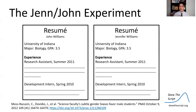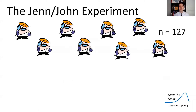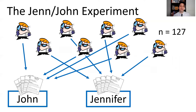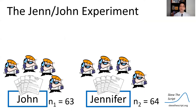The only thing changed across the identical copies of the application materials was the name. In half the copies the name was John; in the other half it was Jennifer. They found 127 science faculty at universities and randomly sent them either a John or Jennifer set of materials. The faculty evaluated those materials thinking they were for a real lab manager position, rated the applicants on higher ability, gave a starting salary estimate, and the researchers compared those two metrics across the John and Jennifer groups.